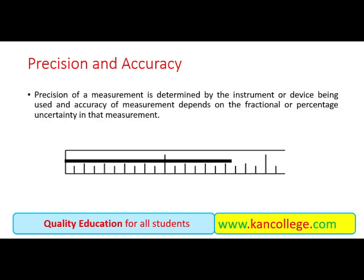Precision of a measurement is determined by the instrument or device being used, and accuracy of the measurement depends on the fractional or percentage uncertainty in that measurement. Ab agar is measuring device ko — jo ke meter rod hai — ghour karein, toh is mein agar farZ kiya mujhe kisi length ko measure karna hai, aur woh exactly us digit tak nahi pahunchi jo ke aksar aisa hota hai ke woh exactly grading line tak nahi aaye, balke thoda aage nikal gayi ya thoda peechhe reh gayi. Toh yahan pe hum guess karte hain, jo ke pichle lecture mein discuss ho chuka hai.